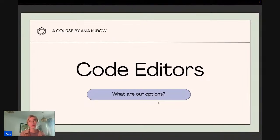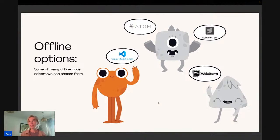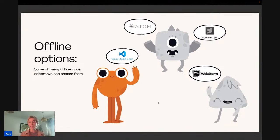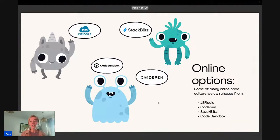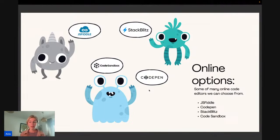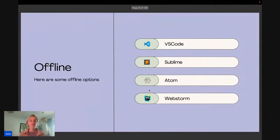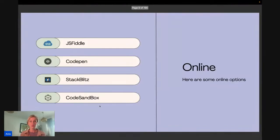So what are our options? There are many. We have some offline options — things you can essentially download onto your laptop. We have Visual Studio Code, which is a popular one, WebStorm, which is the one I tend to use most, as well as Atom and Sublime Text. There are also online options, which means you just visit a URL, don't need to download anything, and you can get to coding straight away. Whatever option suits your needs most is what I'd recommend.